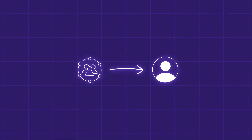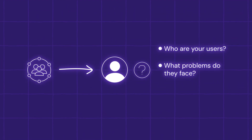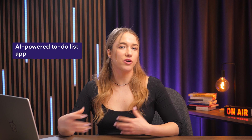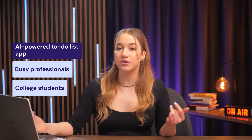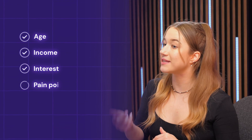Start by defining your ideal user and think about who would use your web app. Imagine an individual and ask: who are they, what problems do they face in life or work, and what does your app do to help them? For example, if you've built an AI-powered to-do list app, are you targeting busy professionals drowning in tasks or college students who want to stop procrastinating? Write down your persona's age, income, interests, pain points, and hobbies, and look back at this as it will help you speak your audience's language.